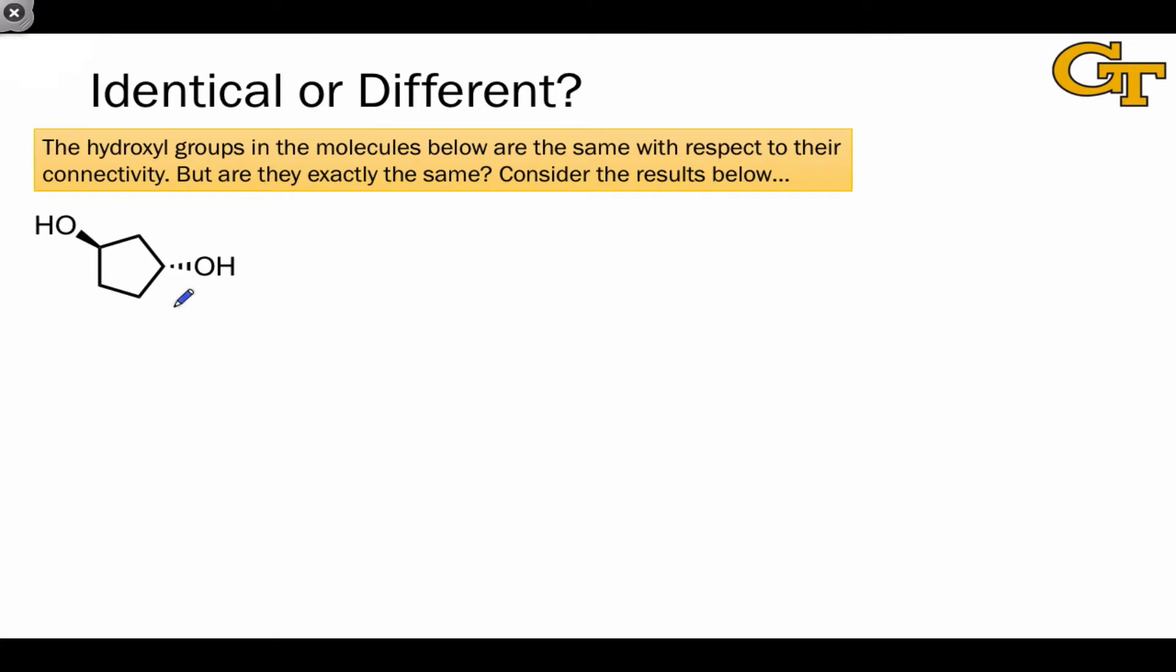To observe these different types of relationships and molecules, let's look at a hypothetical cyclopentane ring bearing two different hydroxyls. The two hydroxyl groups have the same connectivity since they're both connected to a five-membered ring, and they're both two carbons away from another hydroxyl group. But are the hydroxyls exactly the same?